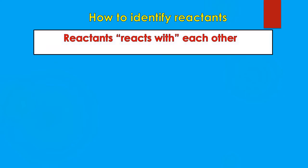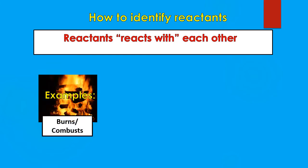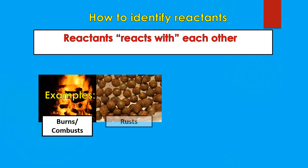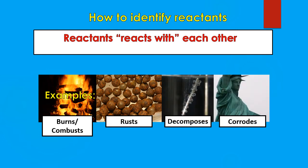Now, how do we identify reactants if we're given the worded form? There are several ways we can identify reactants. Some examples would be things like when we say something burns or combusts, if we say something rusts, decomposes, corrodes, breaks down into — those kinds of words would tell us that a chemical reaction is occurring and we're talking about the reactants of a chemical reaction.